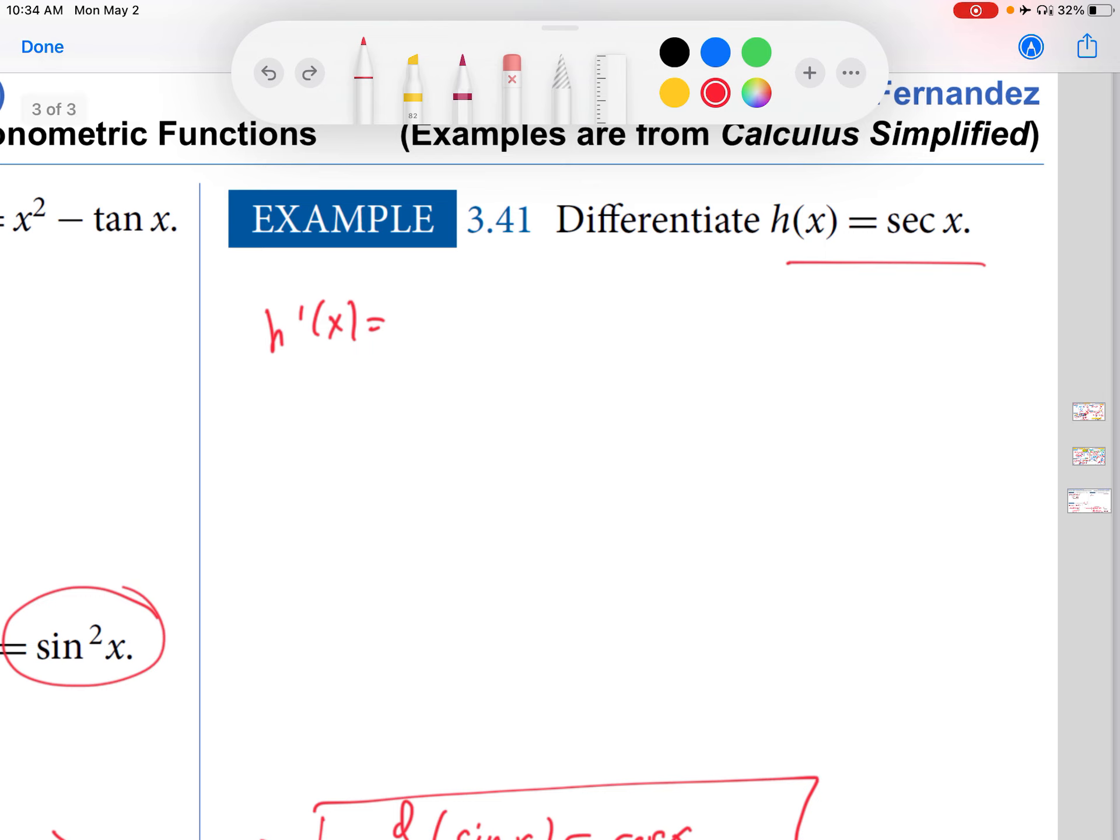So how would I differentiate secant x? Well, the first thing to note is that I can write secant x as 1 over cosine x. That part we did talk about a few minutes ago in this video.